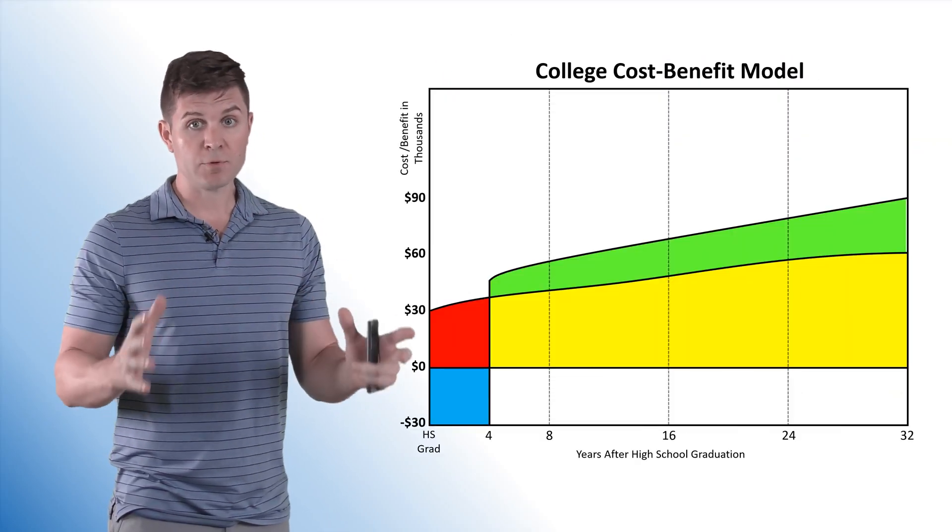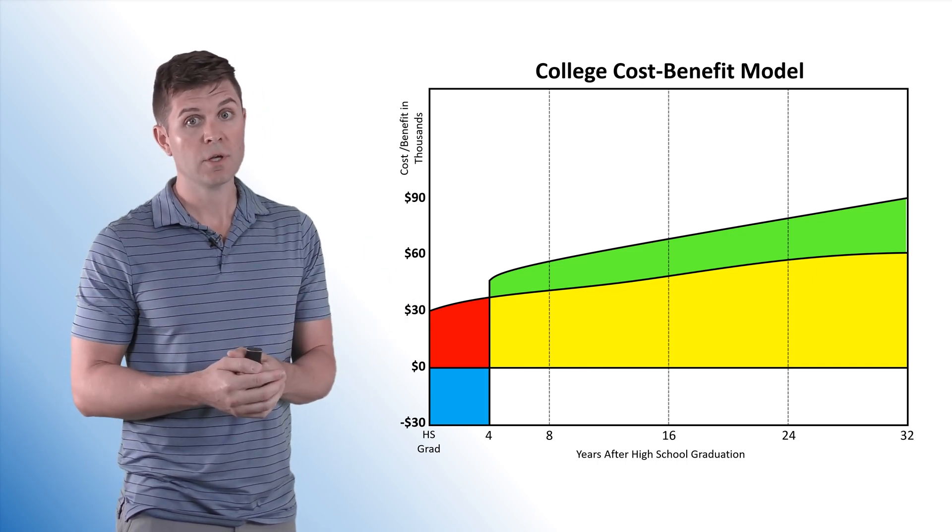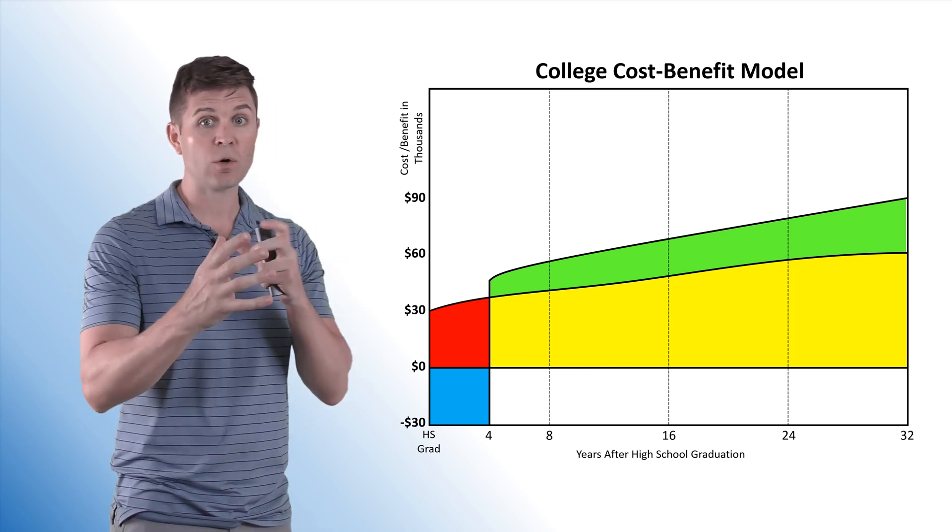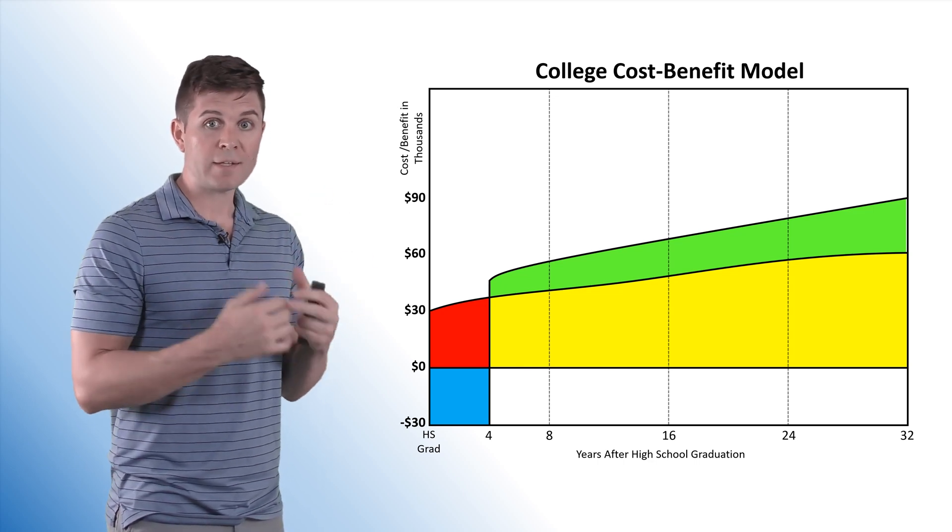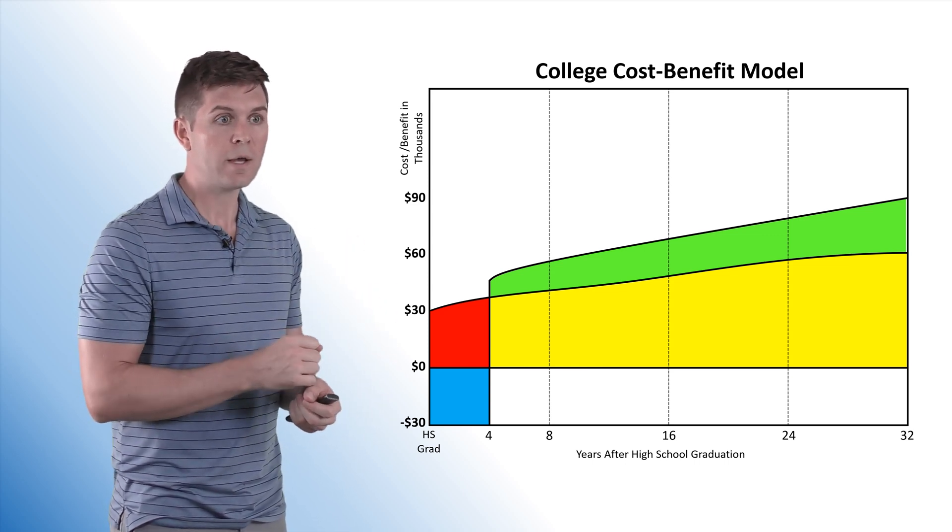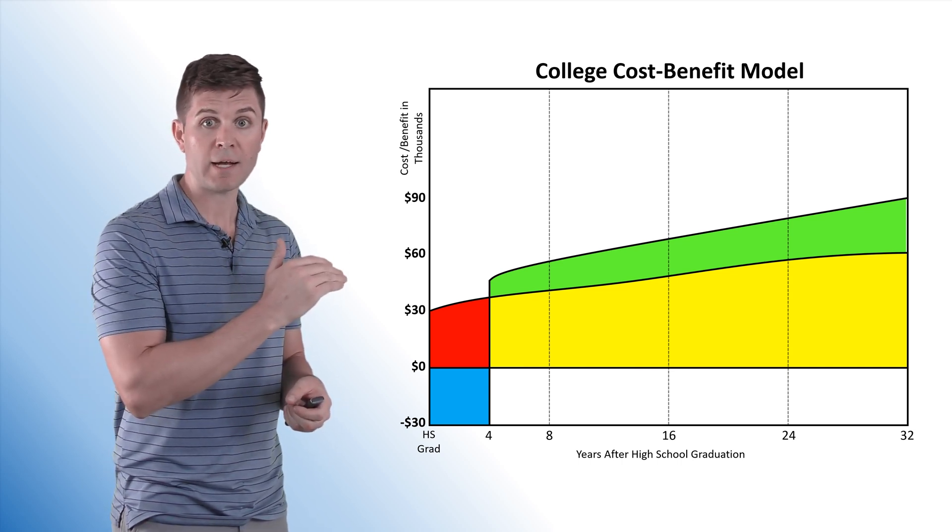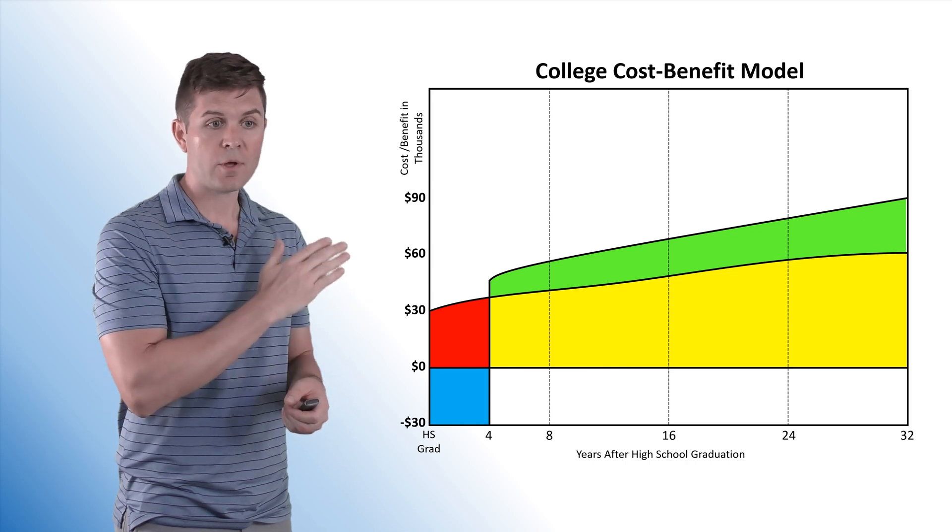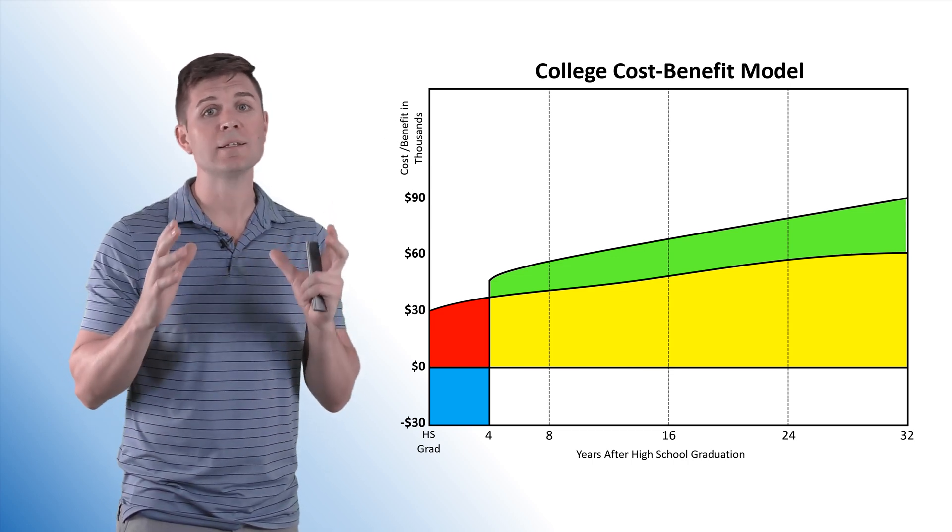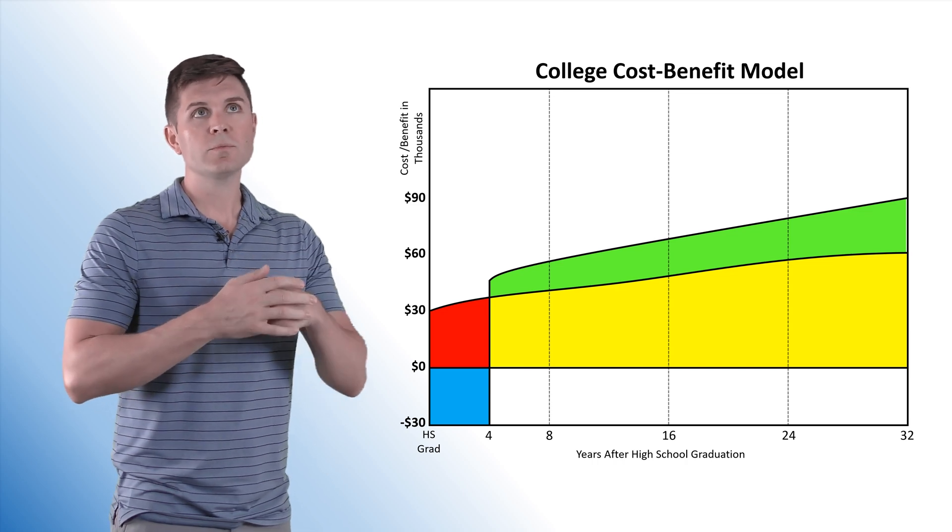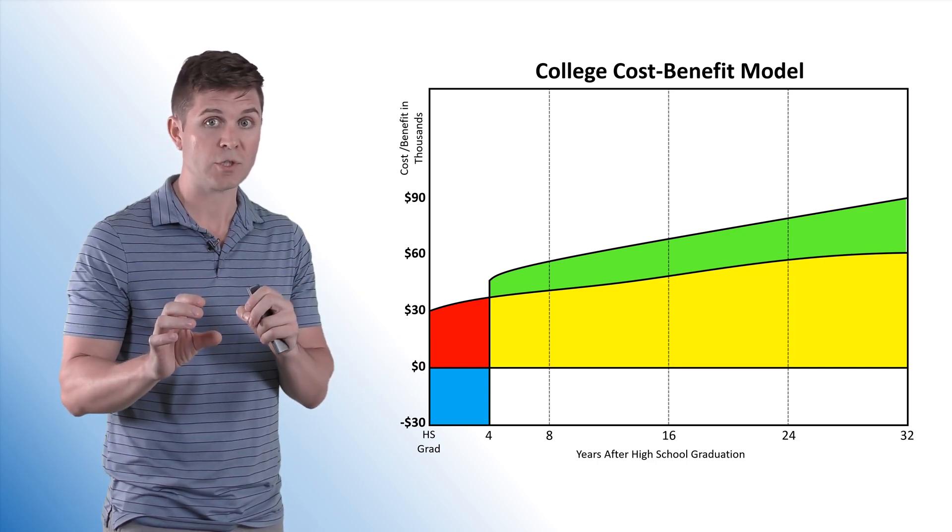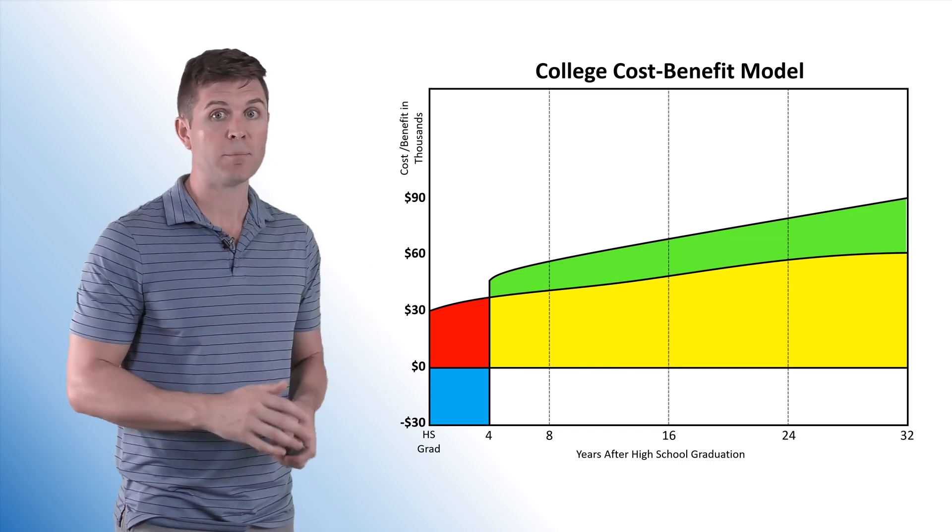One of the best examples of opportunity cost that helps us understand it is the cost of college. Now, in this model right here, the college cost benefit model, we're going to look at opportunity cost, implicit, explicit, as well as looking at that whole cost benefit analysis. So this model represents our decision to go or not to go to college. It represents everything after high school throughout our entire working career. On the vertical axis, we have the cost benefit of going to college in thousands. On the horizontal axis, we have years after graduation. So you have four years after graduation, 8, 16, 24, 32. Now, we're making a lot of assumptions here. We're generalizing and averaging a lot of things out. So there's going to be all sorts of different circumstances with your college situation. I'm just kind of showing you the cost benefit part of it all.